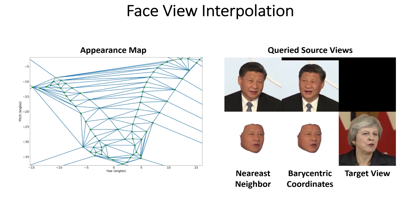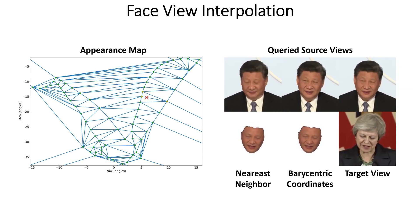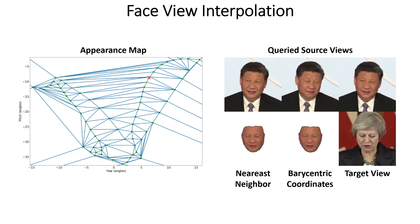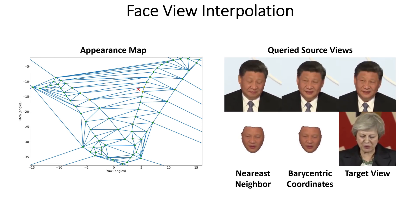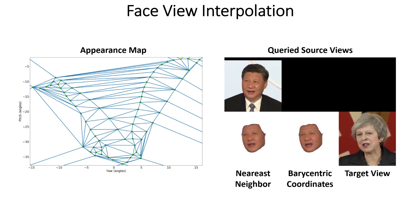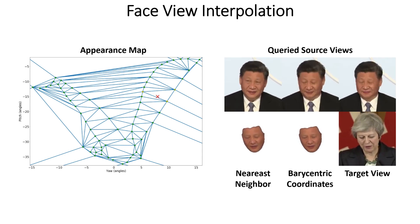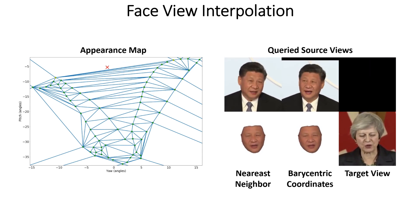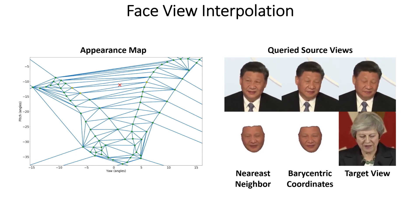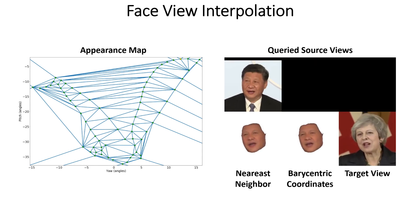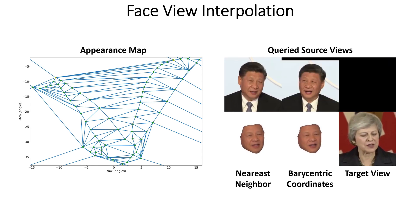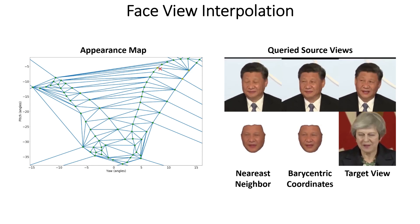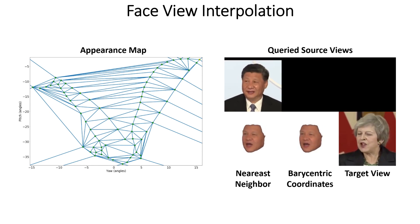Using the Delaunay triangulation on the face poses, we construct an appearance map for the source face. To interpolate between the source face views in a continuous way, we first use our reenactment generator to align the queried source views to the same pose and expression, followed by barycentric coordinates interpolation.